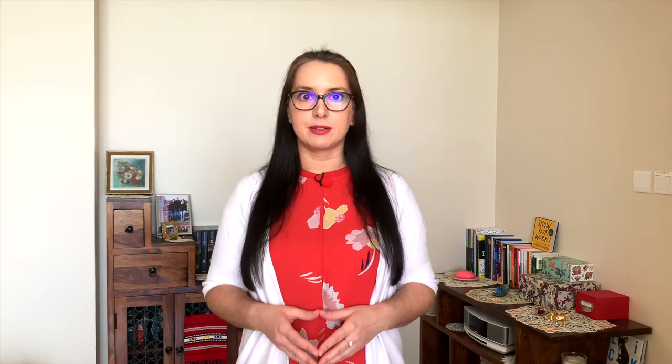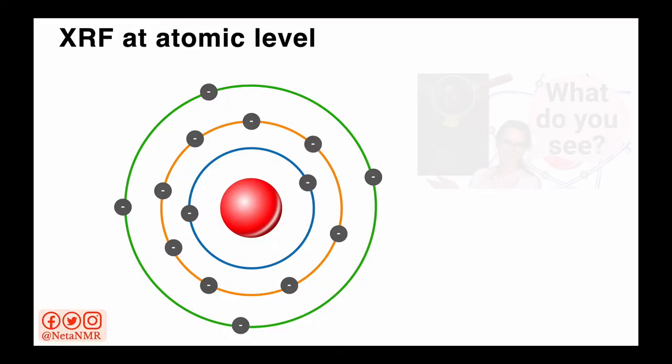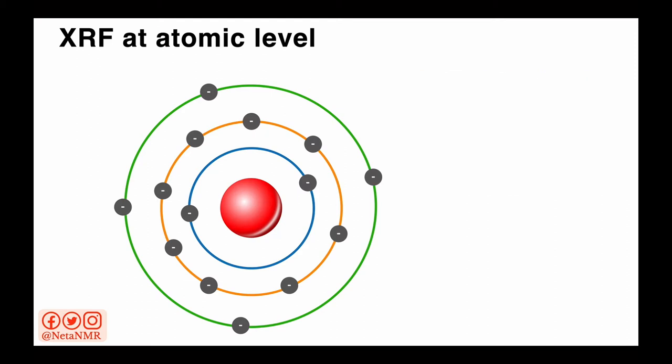Now let's see what happens at atomic level when we irradiate a sample with X-rays. This is the structure of the atom that we've discussed in a previous video. Just a quick reminder that the atom is composed of the nucleus in the center, and surrounding the nucleus we find the electrons. And the electrons are located in different shells corresponding to different energy levels, with the innermost shell being the lowest energy shell.